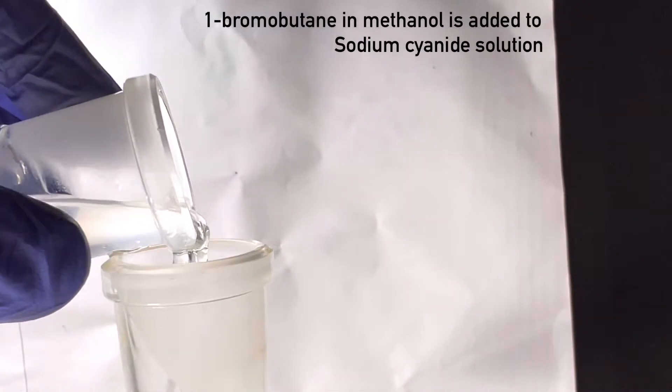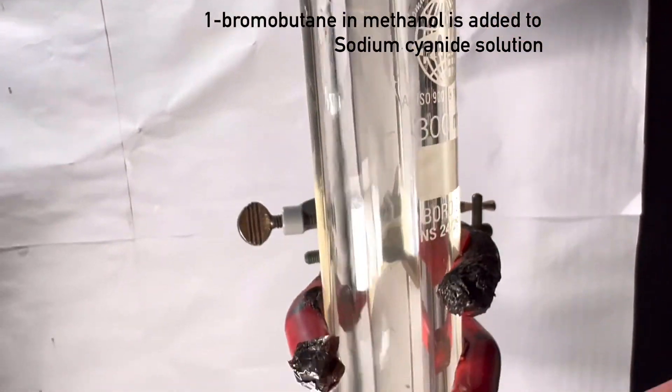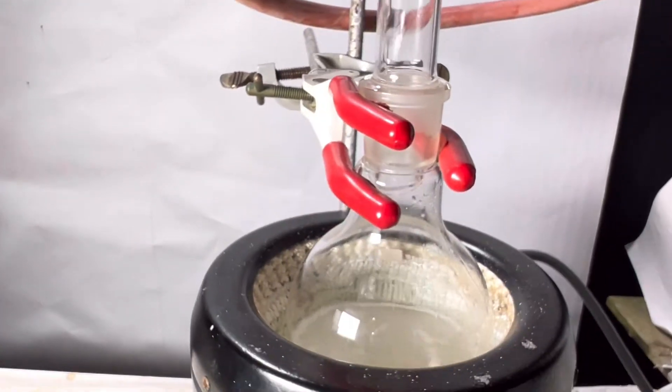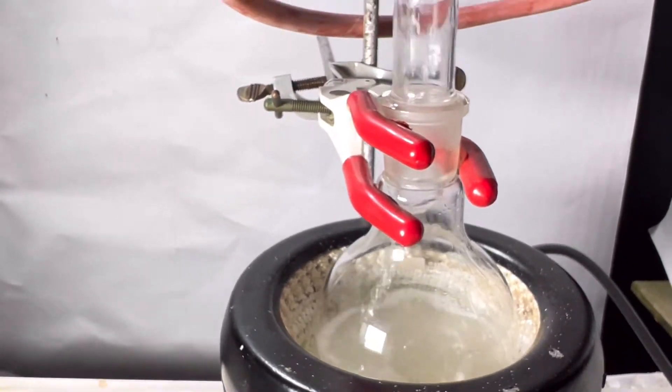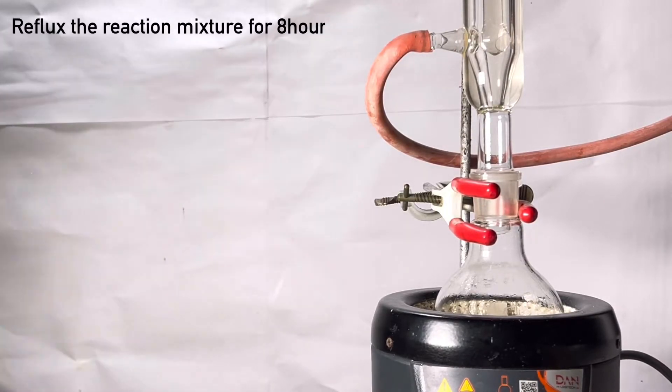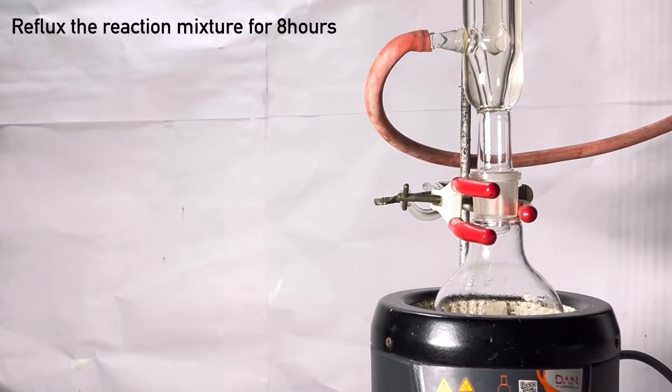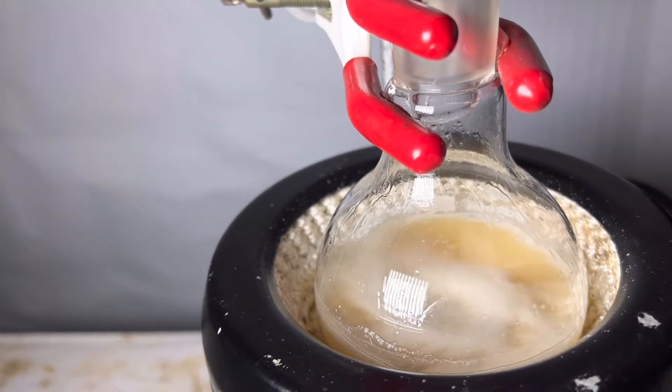Now the 1-bromobutane in methanol solution is added to the round bottom flask through the top of the condenser. Now the flask is heated gently. Soon a gentle reflux commences and the reflux was continued for another 8 hours.